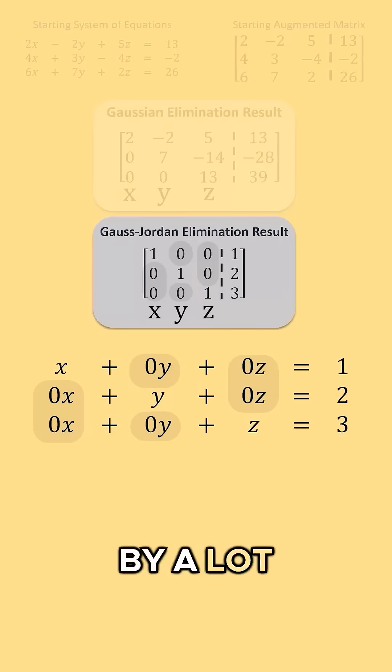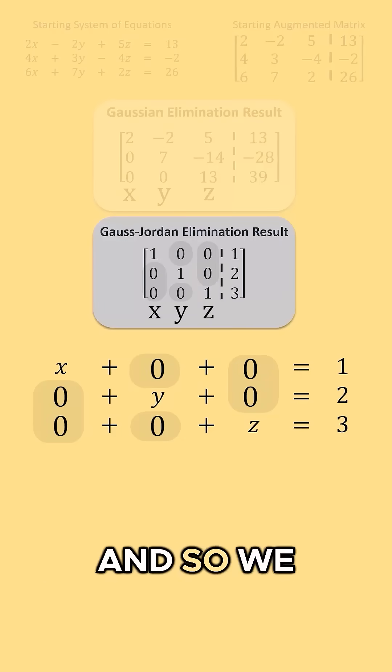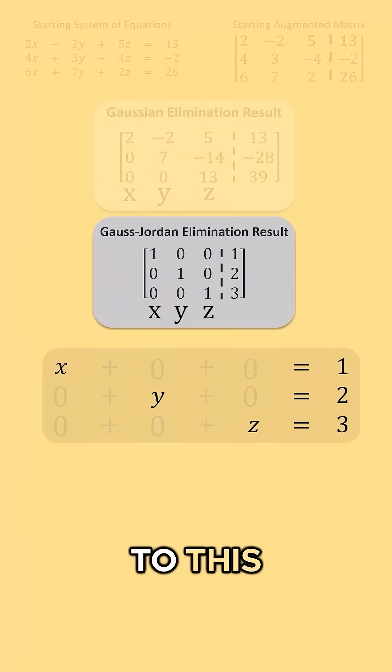we see 0 multiplied by a lot of different variables. All of these we know are equal to 0, and so we can reduce this bottom system of equations to this.